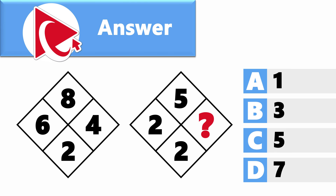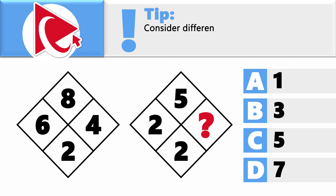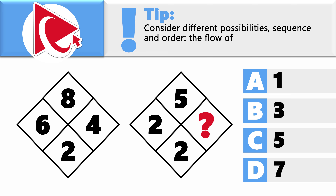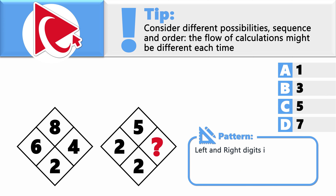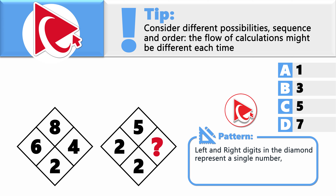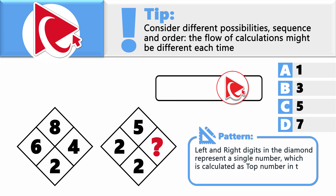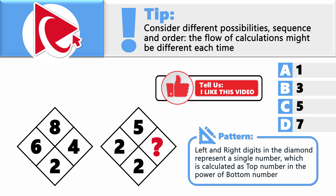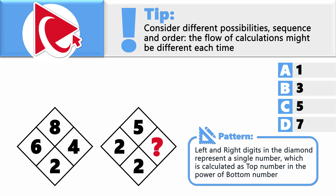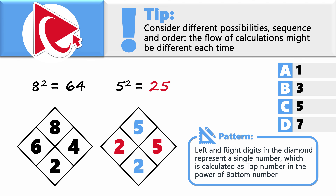The key to solving this challenge is to determine the pattern, considering different possibilities, sequences, and orders. The left and right digits in the diamond represent a single number calculated as the top number to the power of the bottom number. For example, in the left diamond, the top number is 8 and the bottom is 2: 8 to the power of 2 is 64. For the missing value: 5 to the power of 2 is 25, so the correct answer is choice C, 5.